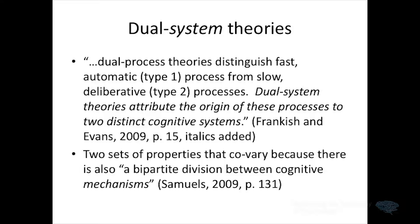After a while, people started thinking about how these two different processes were implemented at a cognitive level, and there was discussion of not dual processes but dual systems. Frankish and Evans say that dual process theories distinguish between different kinds of processes, while dual system theories attribute the origin of these processes to two distinct cognitive systems. Samuels talks in terms of cognitive mechanisms — the idea being that we have Type 1 processes on one hand and Type 2 processes on the other because there are distinct forms of cognitive processing.